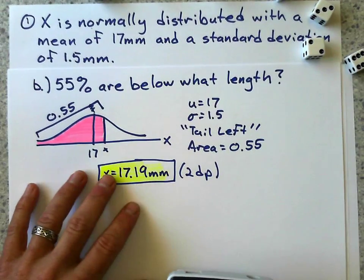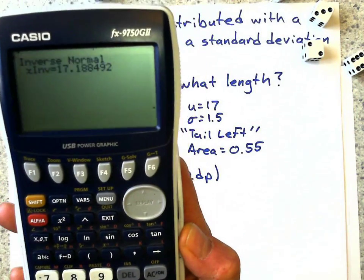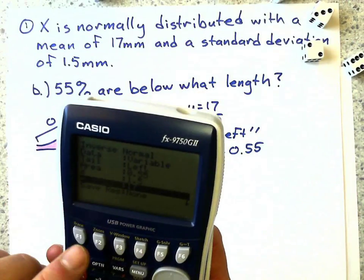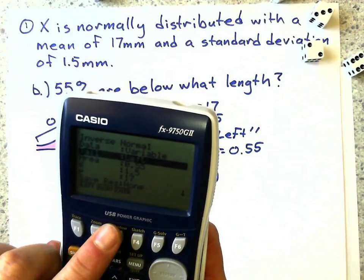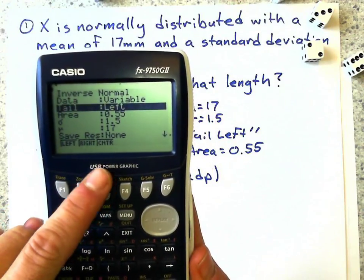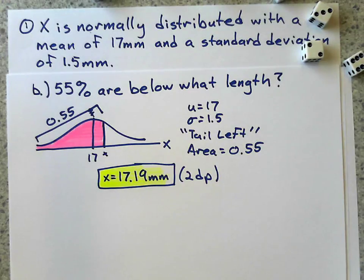So that's how we do some inverse normal on here, and that's just about it. I didn't do any examples of when we have a center one, like the interquartile range, but I can do that in another video. Thanks for watching.